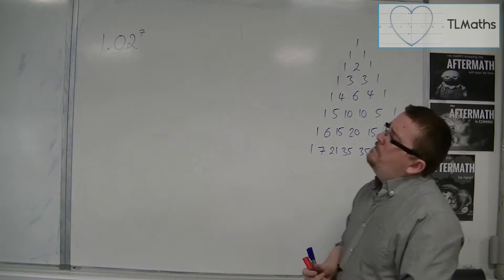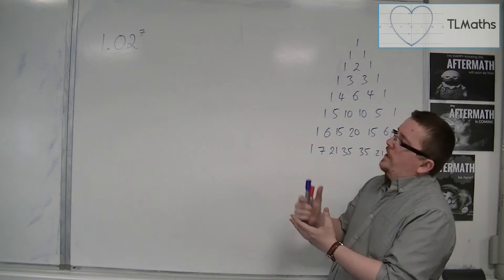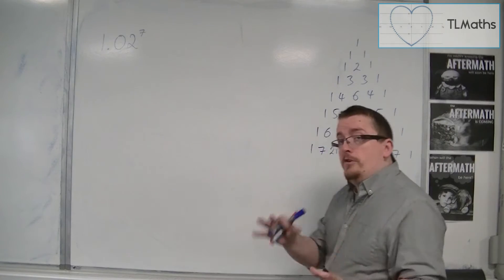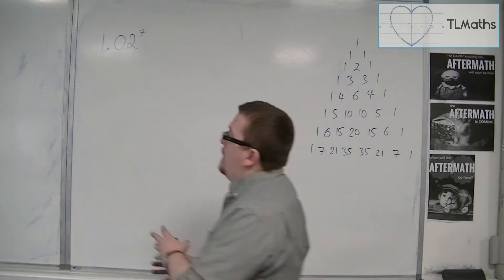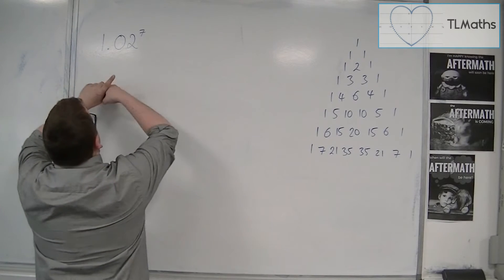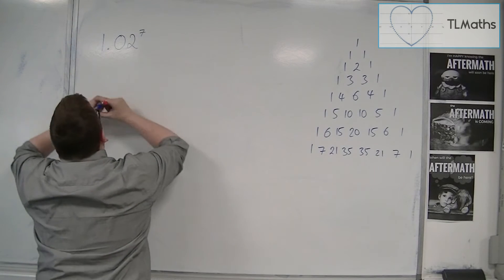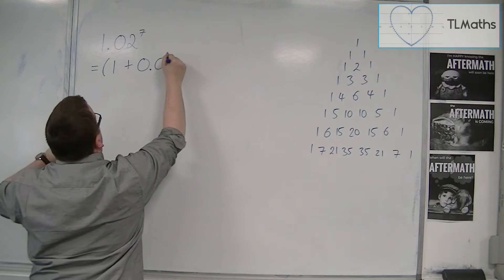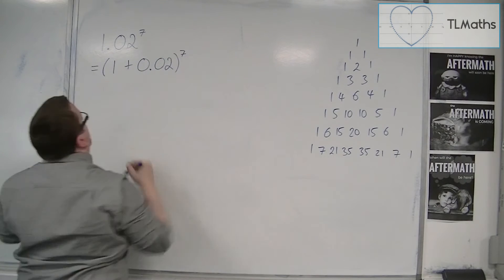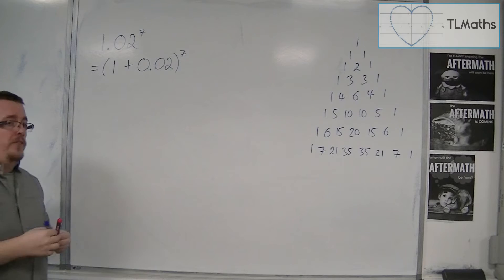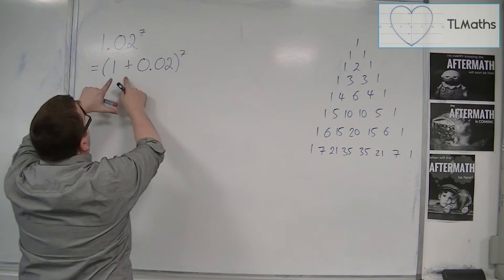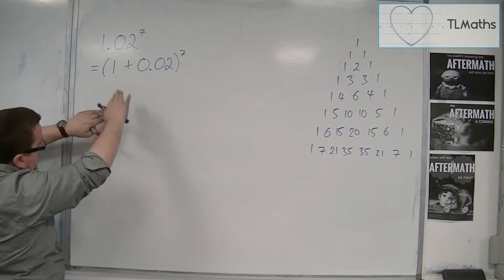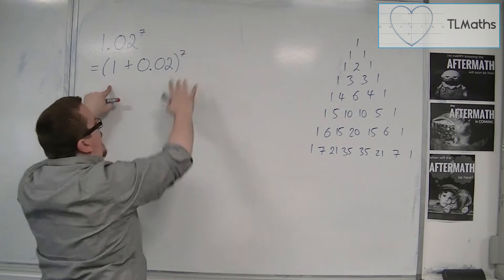It doesn't immediately look like a problem that we could solve using binomial expansion, but I'm going to show you how you could do it. Because 1.02, if you just think of that, you could write as 1 plus 0.02 to the power of 7. So if I split the 1.02 to 1 and the 0.02 part, then it almost looks like 1 plus x to the power of 7.